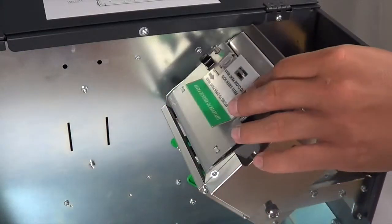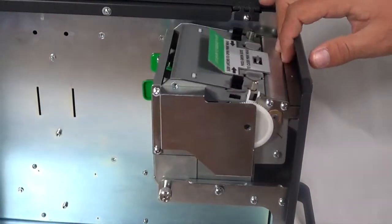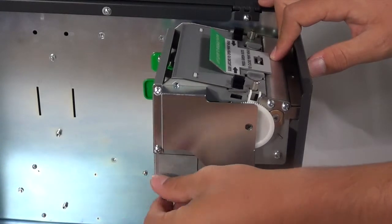Close the printhead assembly cover. Be sure you hear the left and right click. Lift the printer back to the original position and screw the thumb screw back into place.